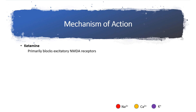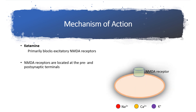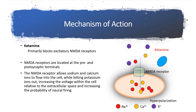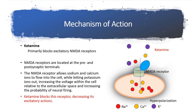Ketamine primarily functions by blocking excitatory NMDA receptors. The NMDA receptors are located at pre- and post-synaptic terminals and act as a type of glutamate receptor. The NMDA receptor allows sodium and calcium ions to enter the cell while permitting potassium ions to exit, increasing the cellular voltage relative to the extracellular space and increasing the probability of neural firing. When ketamine is introduced, it blocks the NMDA receptors, decreasing their excitatory action. This is the primary mechanism by which ketamine works as a general anesthetic.